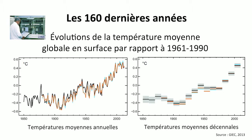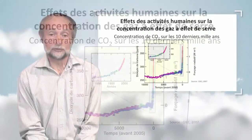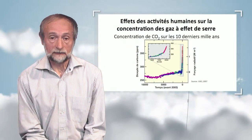We must become aware of the fact that the climate is warmer. We also must understand that the concentration of some gases, especially CO2, has also increased, especially since the beginning or the mid-19th century. Here we have the concentration of CO2 in the atmosphere expressed in parts per million. A value of 300 means a concentration of 0.3 per thousand versus the air. This is a very quick increase.